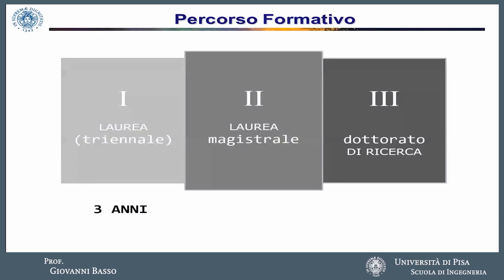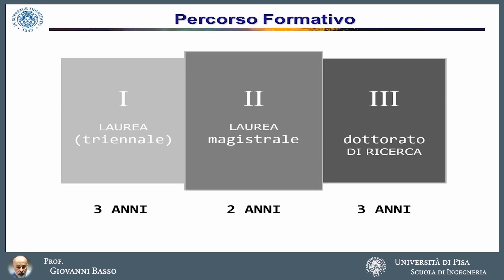The training course of the electronic engineer begins with the entrance to the degree of electronic engineering, which is a triennial course. At the end of this first phase, it is possible to enter the world of work. However, more than 95% of our triennial graduates continue their training in a master's degree. The master's degree in electronic engineering lasts two years. After five years of training, the master's graduate in electronic engineering is highly prepared for entry into the world of work. Whoever desires can continue their training in a research degree obtained through competition, which has a duration of three years.